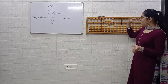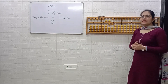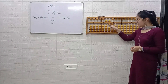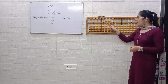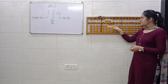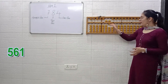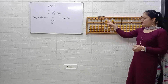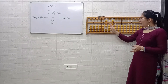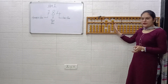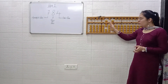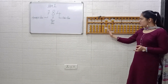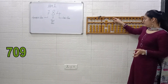Next example: at hundreds place it is 5. At tens place: 5, 6. At ones place: 1. So the answer is 5, 6, 1 — that is 561. Next example — hurry up. At hundreds place: 5, 6, 7 — that is 7. At tens place: it's 0. Do not skip it — it's 7 at hundreds and 0 at tens. At ones place: 5, 6, 7, 8, 9. So the answer is 7, 0, 9 — that is 709.